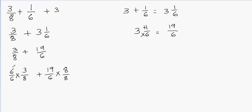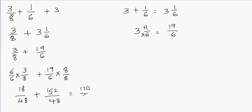What we're going to do is multiply the numerators and denominators. So 6 times 3 will be 18, and 6 times 8 is 48, plus 19 times 8 is 152, and 6 times 8 is 48. Now you see that the denominators are equal. I can go ahead and add the numerators. So 152 plus 18 will be 170, and we never add the denominator, so the denominator will be 48. I got 170 over 48.